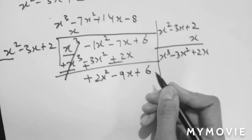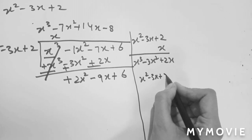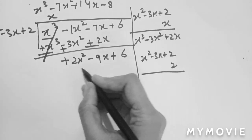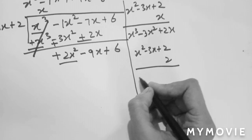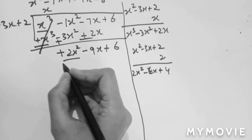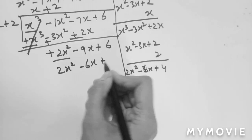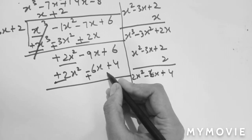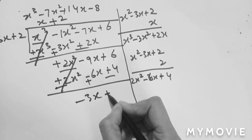Now we subtract. Plus becomes minus, minus becomes plus. x³ - x³ cancels. For x²: minus 3 minus 1 gives 2x². For x terms: plus 7 plus 2 gives 9x. And plus 6 remains. Now we divide again. We need to make 2x² from x², so we multiply by 2. 2 times x² is 2x²; 2 times minus 3x is minus 6x; 2 times plus 2 is plus 4. We write 2x² - 6x + 4 below.